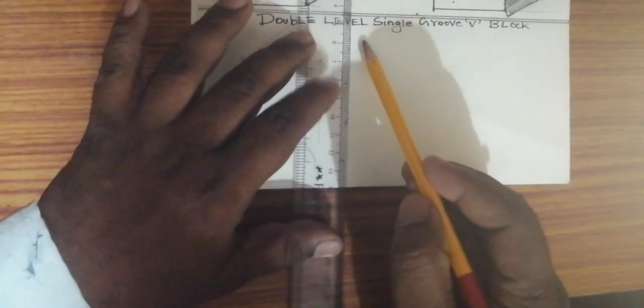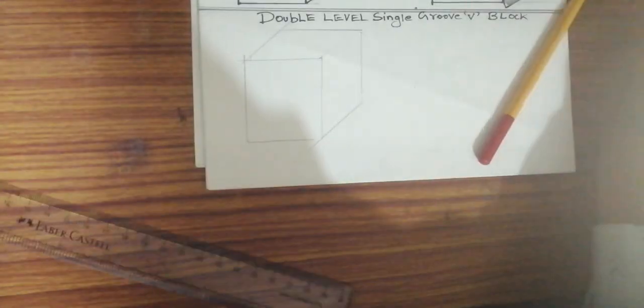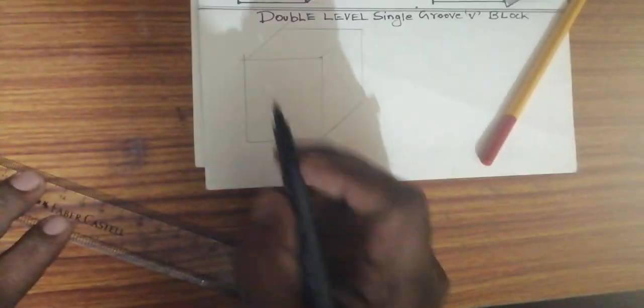Draw like a block, that's very simple. After drawing the block, see what is that V block, take here...